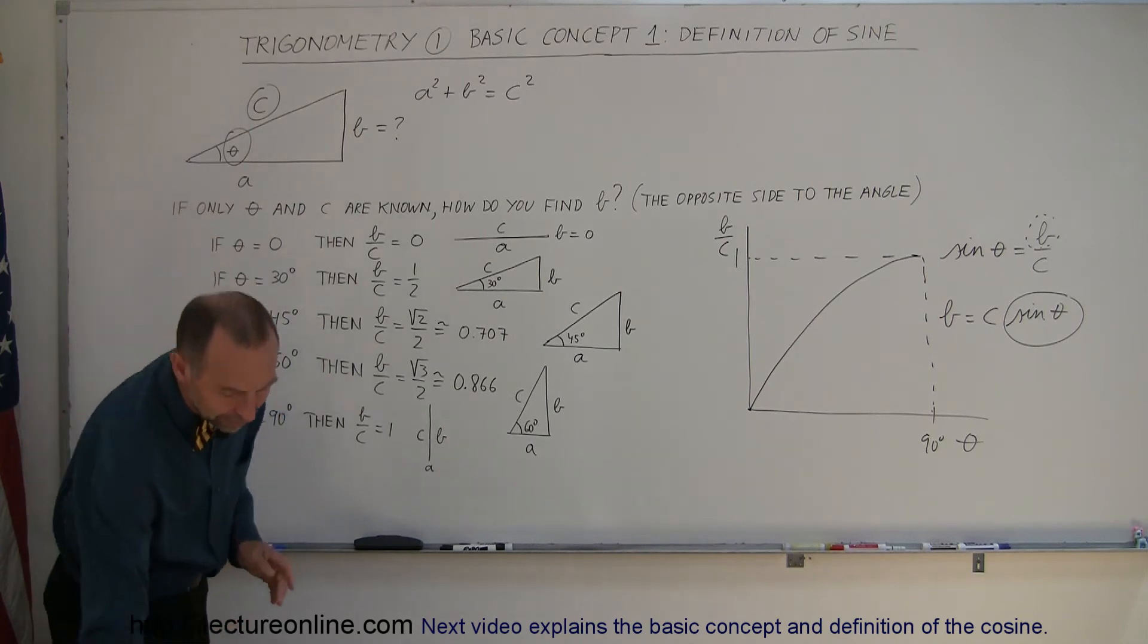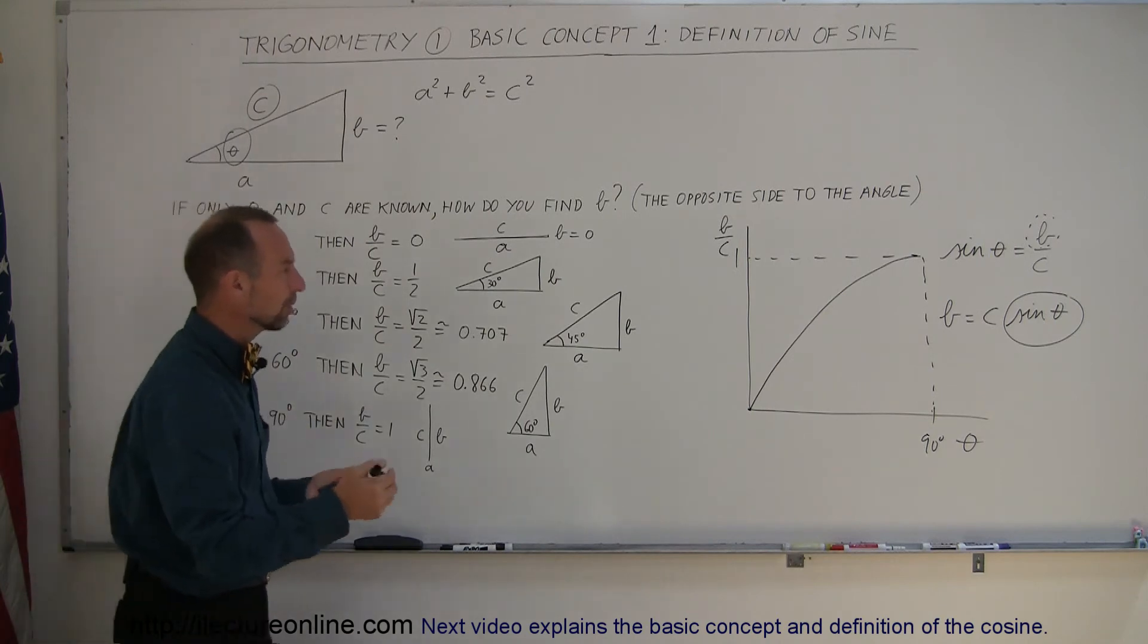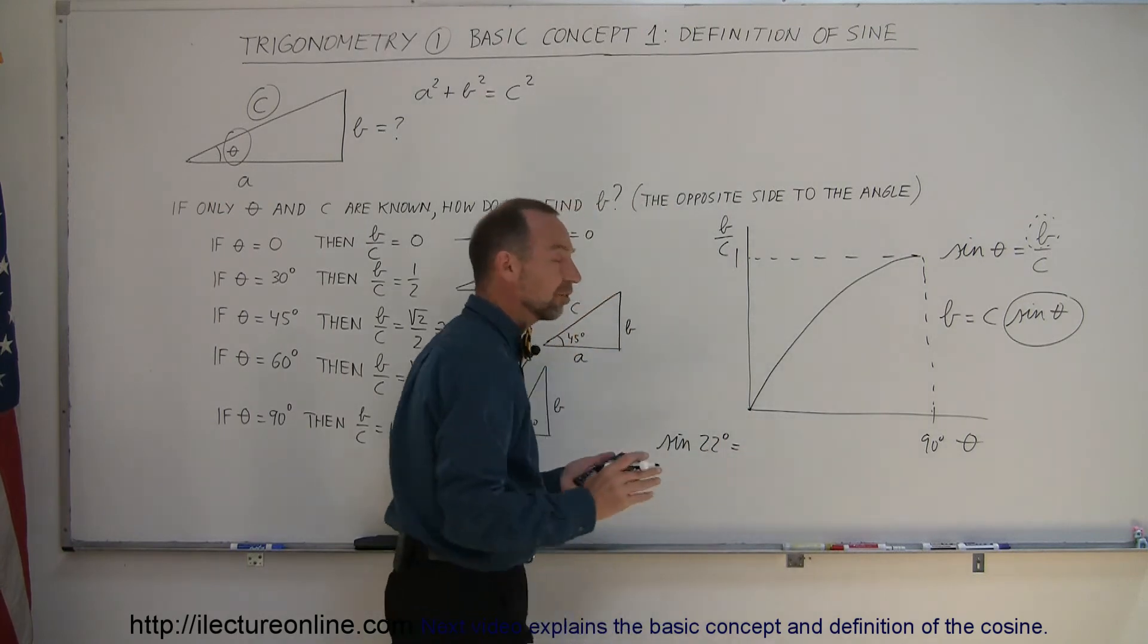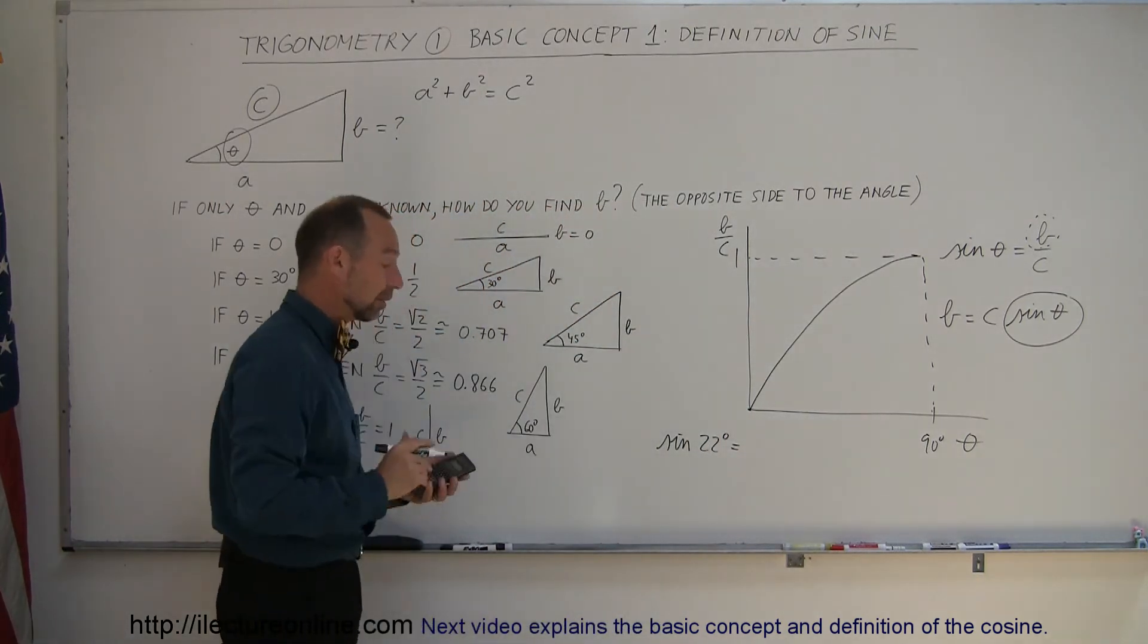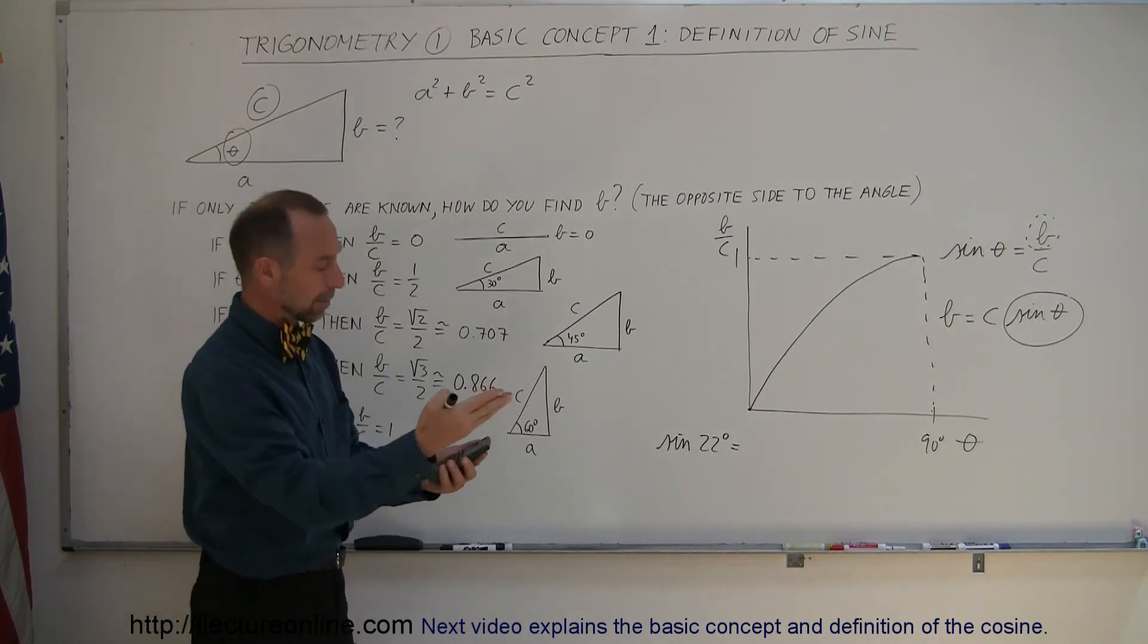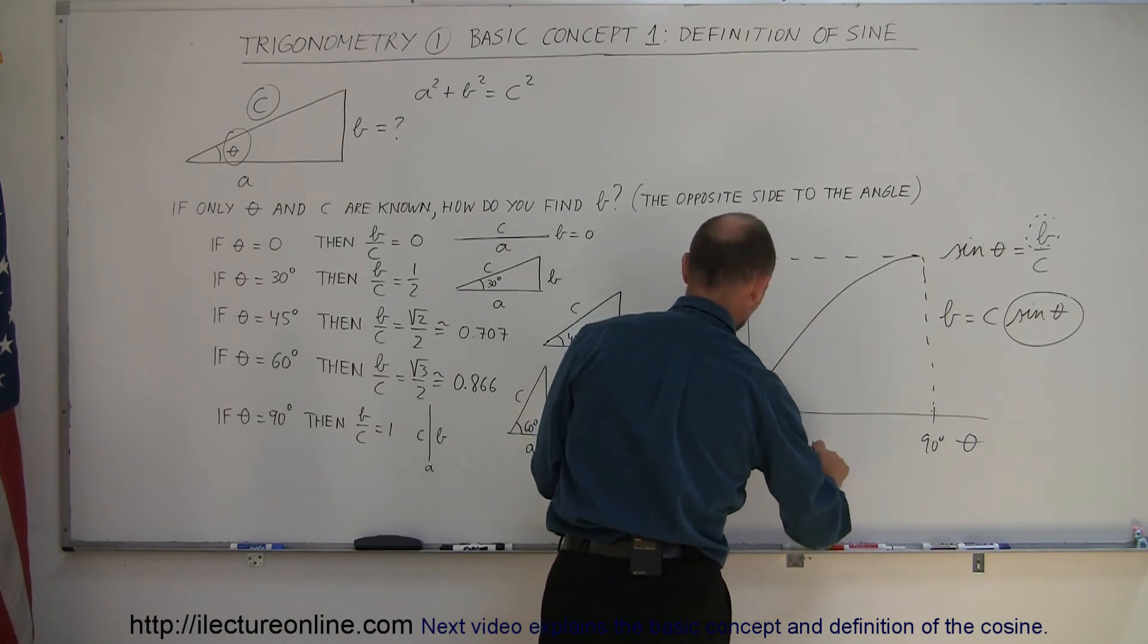Nowadays, with calculators, that has become a lot easier. If we want to know what the sine of 22 degrees is, which is the ratio of the opposite side to the adjacent side of the triangle, we just plug in 22 in the calculator, hit the sine button, and out pops 0.3746.